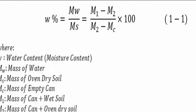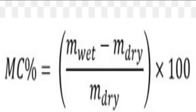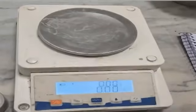Then we have the mass of oven dry soil, Mc is the mass of the empty can, M1 is mass of can plus wet soil, and M2 is the mass of can plus dry oven soil. The moisture content is calculated as: w% = Mw/Ms = (M1 - M2)/(M2 - Mc) × 100.